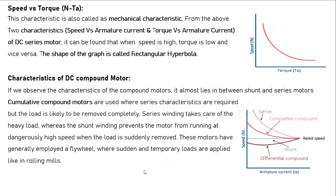The speed versus torque characteristic of the series motor is also called the mechanical characteristic. It is derived from the speed-current and torque-current characteristics. When speed is high, torque is low, and vice versa. This curve takes the shape of a rectangular hyperbola.